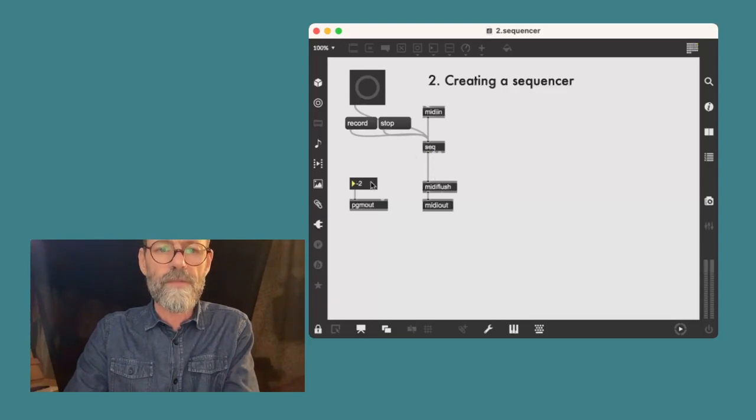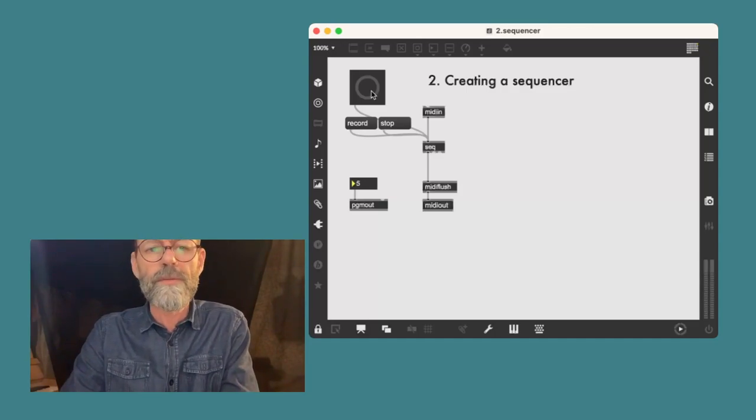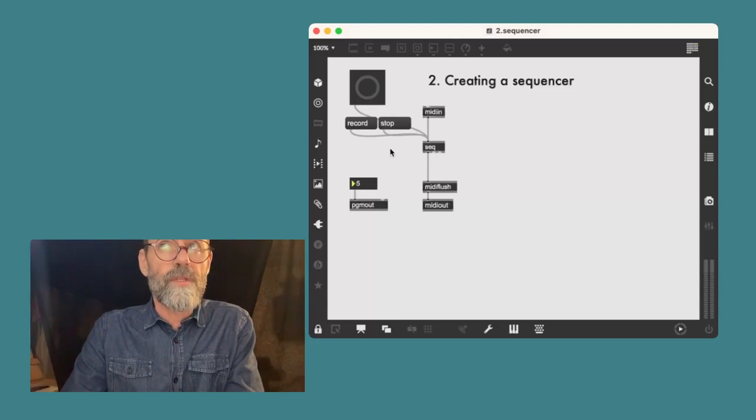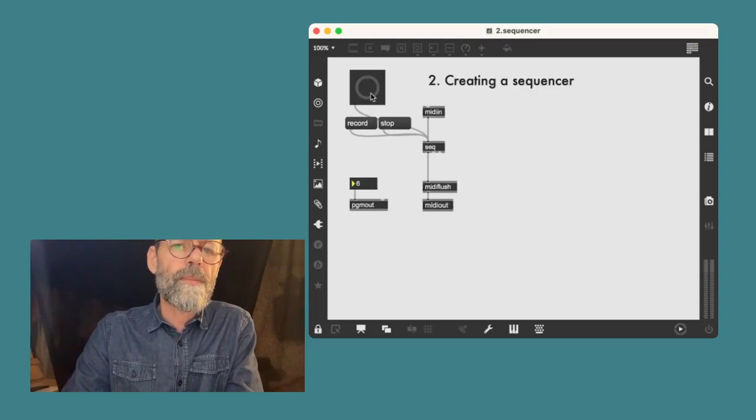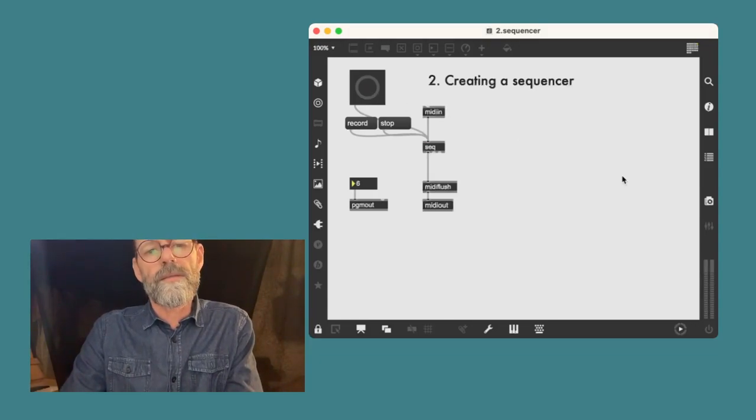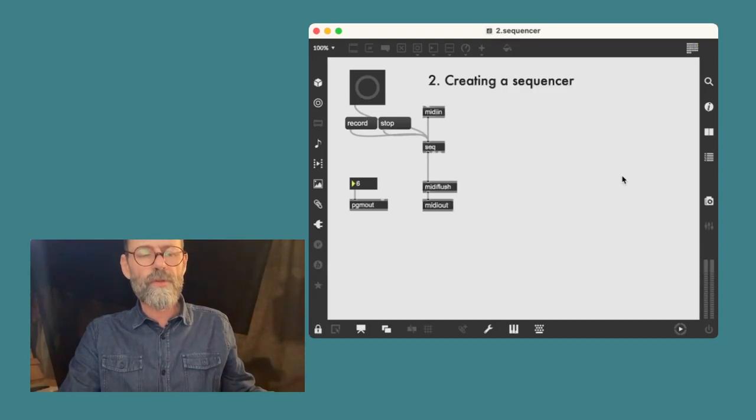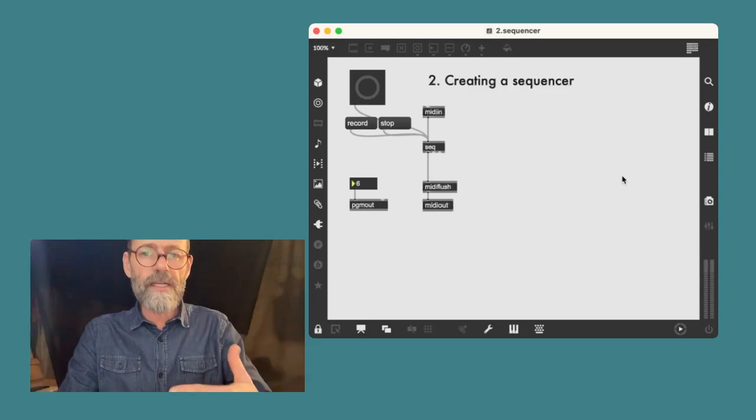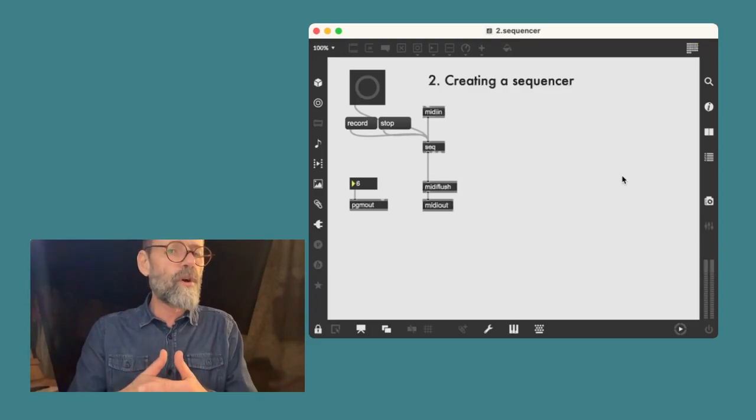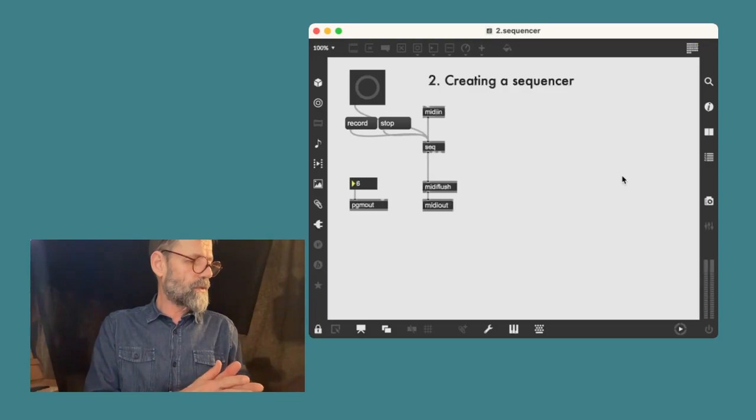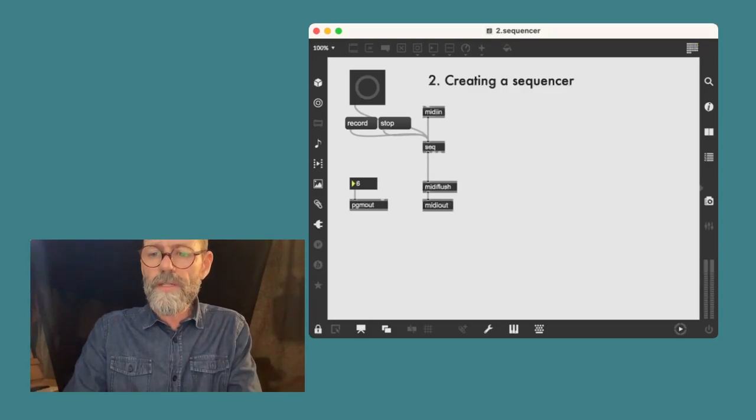That was maybe a Fender Rhodes or something along these lines. This sequencer could also be controlling an external synthesizer like the Crave I was just showing you. And this adds, from my perspective, some other kinds of possibilities than using the sequencer which is built-in in the Crave. I'm going to get back to this in a moment.